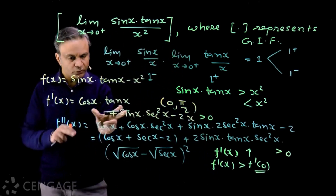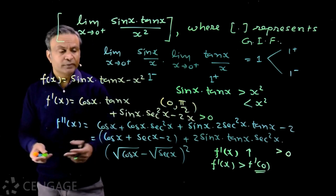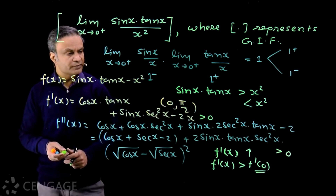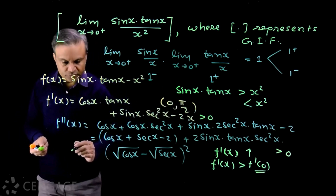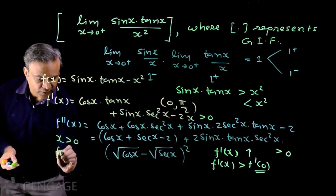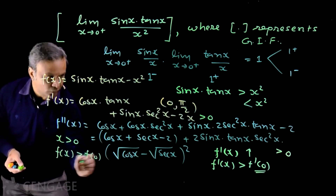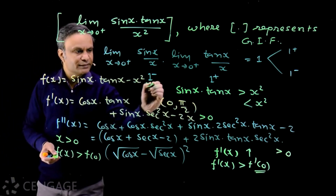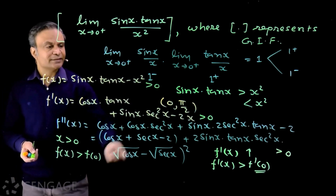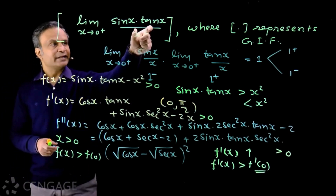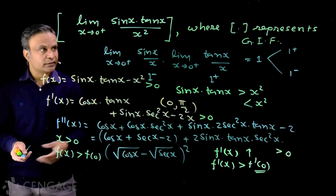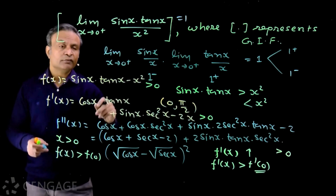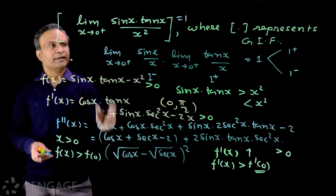Since f'(0) = 0, we get f'(x) > 0. This means f(x) is increasing in the interval, so for x > 0, f(x) > f(0) = 0. Therefore sinx·tanx − x² > 0, i.e., sinx·tanx > x². So sinx·tanx/x² > 1, the limiting value is 1+, and the greatest integer less than or equal to this limit is 1. This is one very nice application of monotonicity in finding such limits.